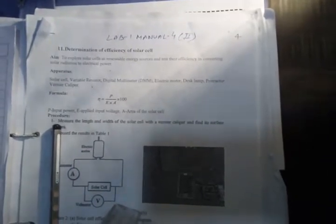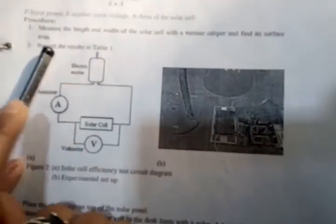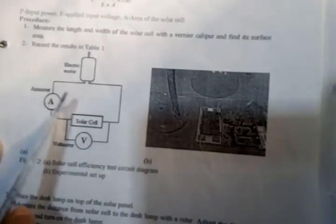As mentioned, the efficiency formula is simply the ratio of output power upon input power. You multiply this result by 100 to get the efficiency as a percentage. The power P is represented in terms of V × I, so we need to calculate both V and I from the solar cell, voltmeter, and ammeter.